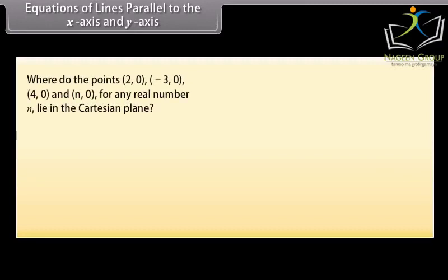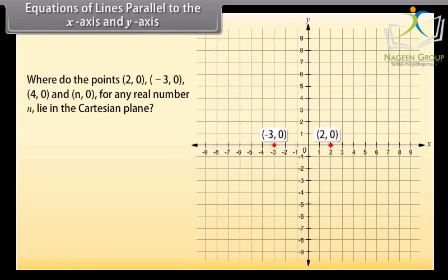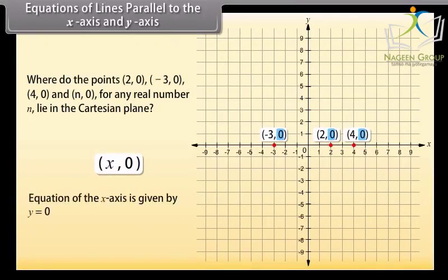Equations of lines parallel to the x-axis and y-axis. Where do the points (2, 0), (−3, 0), (4, 0), and (n, 0) for any real number n lie? They all lie on the x-axis because on the x-axis the y-coordinate of each point is 0. Every point on the x-axis is of the form (x, 0), so the equation of the x-axis is y equals 0. Similarly, the equation of the y-axis is x equals 0.